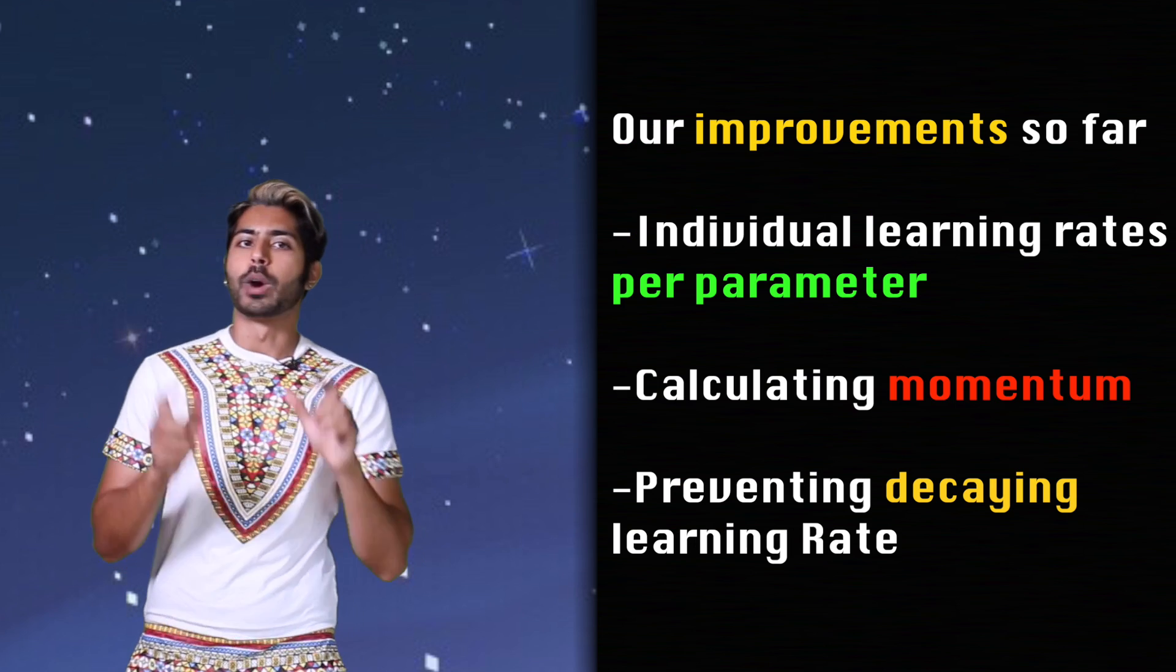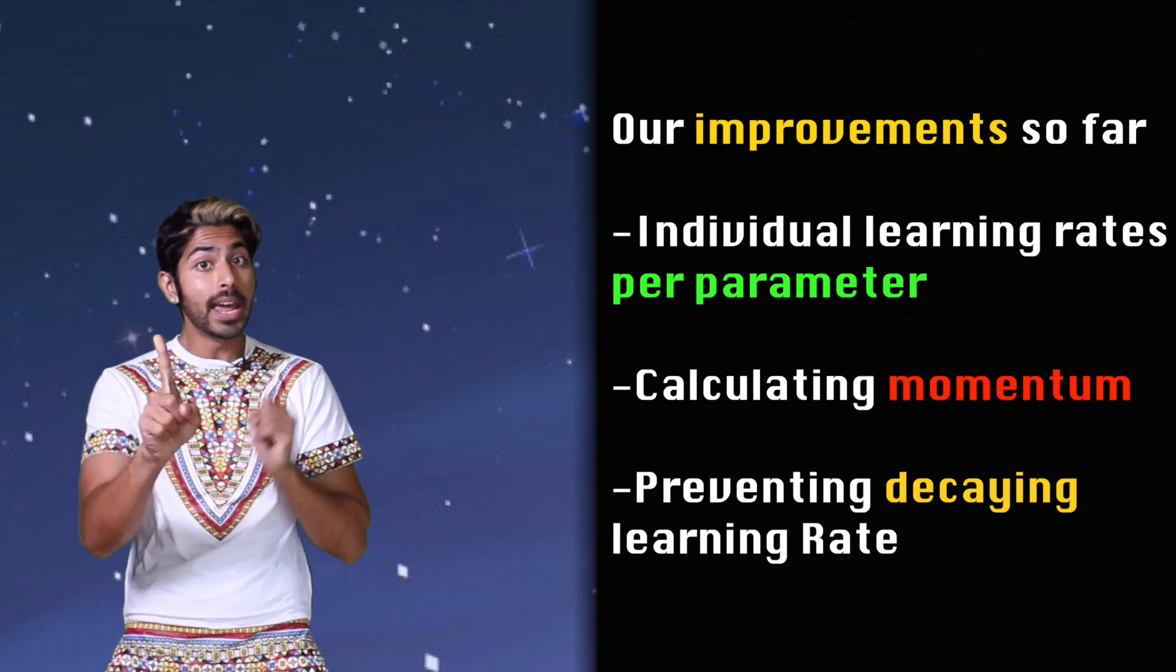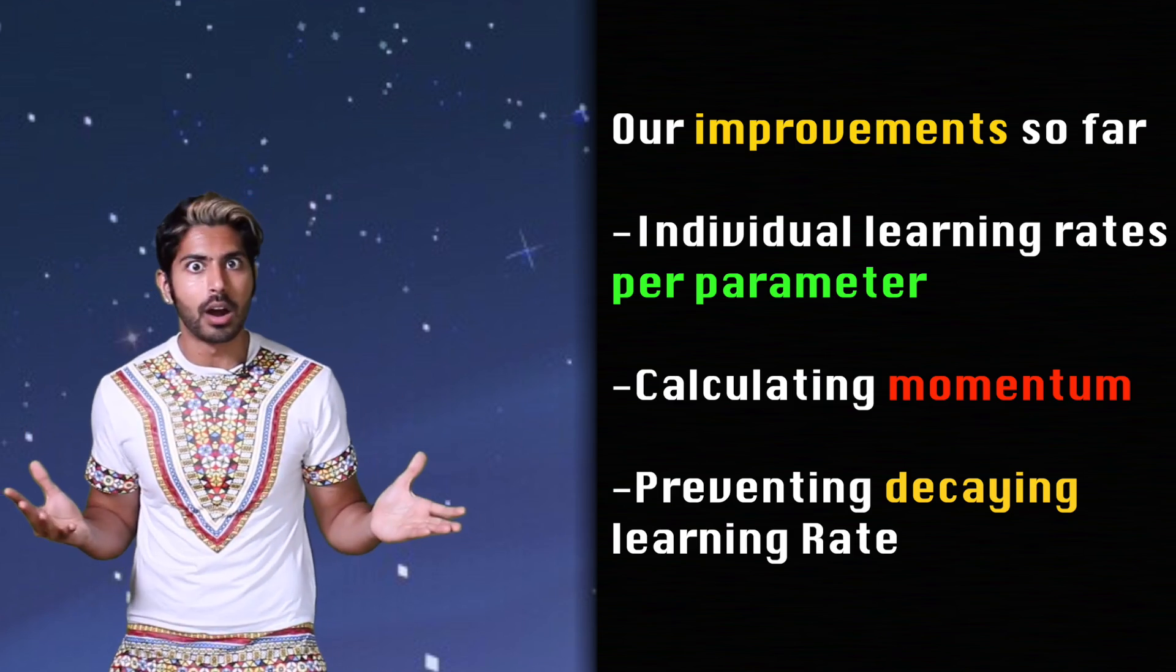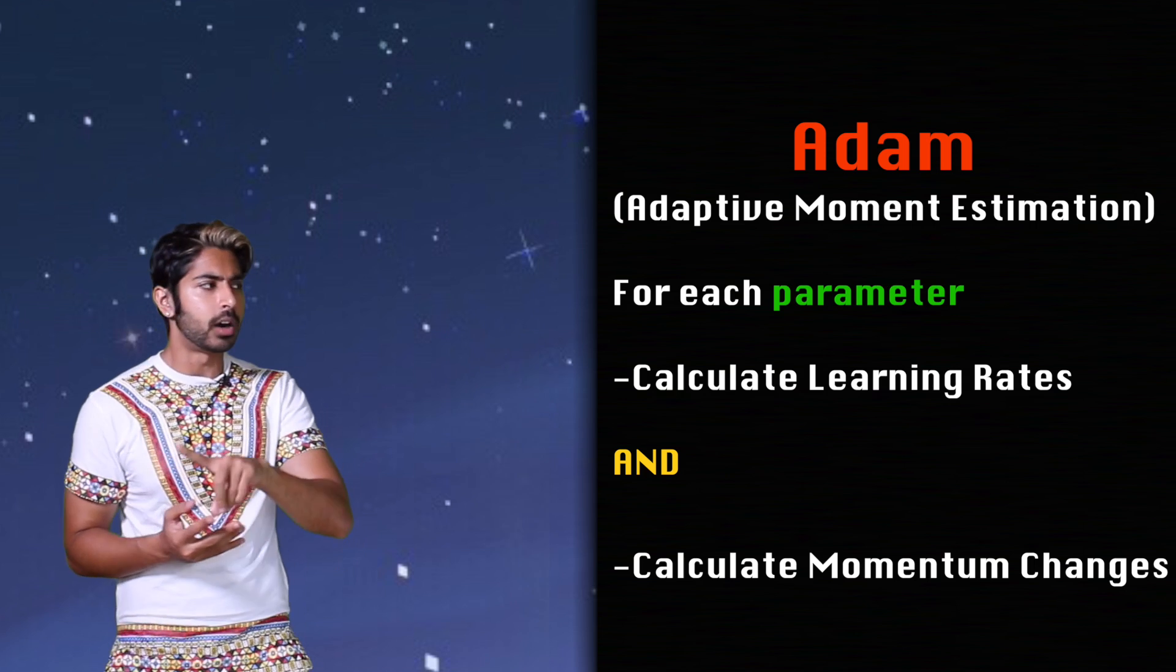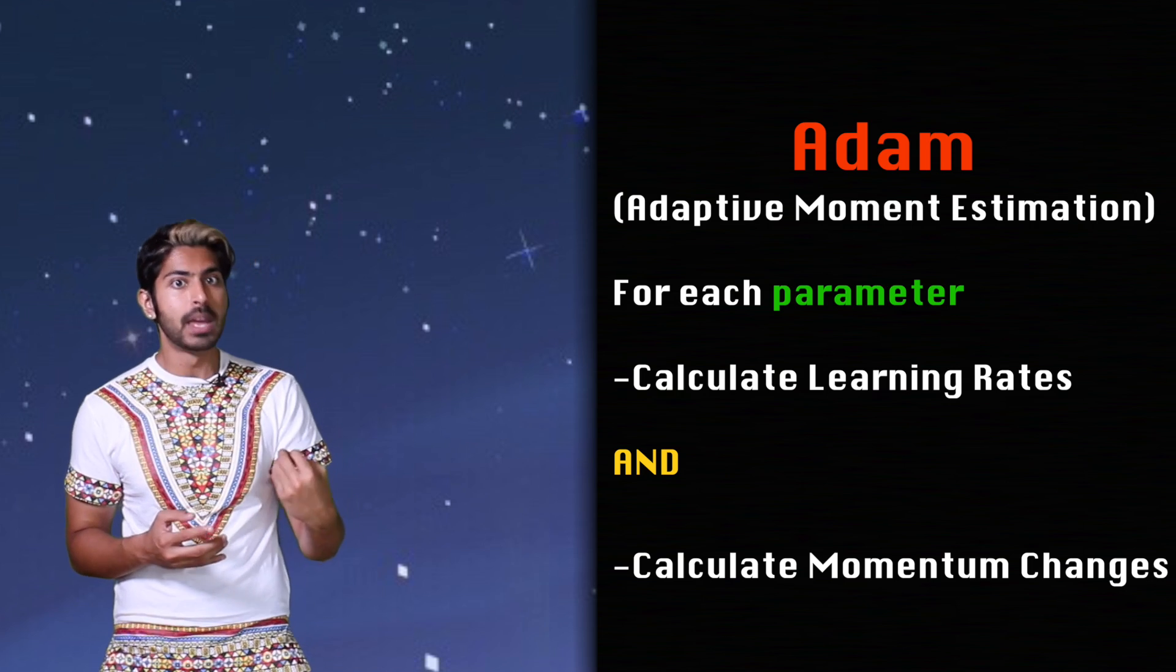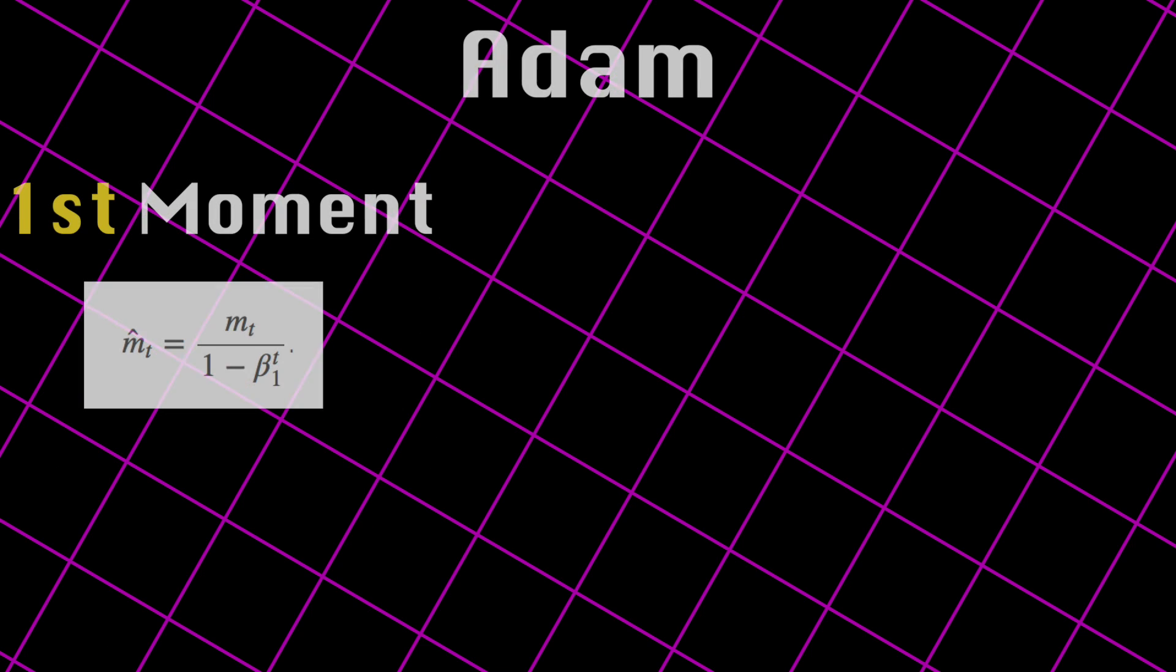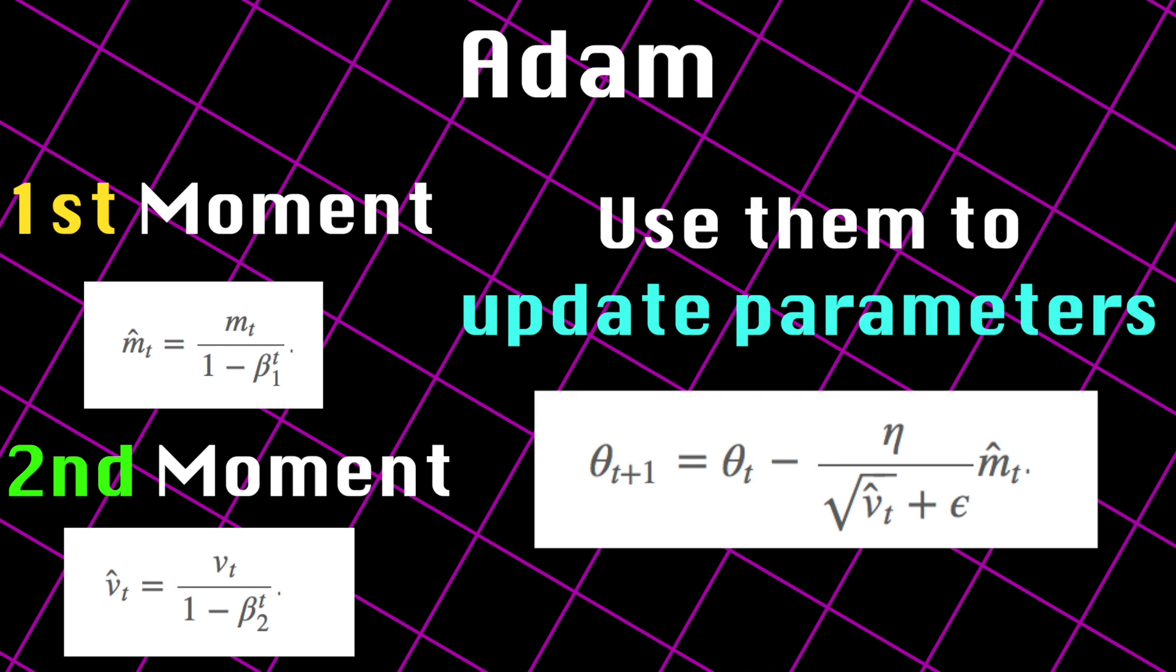So now we're getting somewhere. We're calculating individual learning rates for each parameter, calculating momentum values, and we're preventing a vanishing learning rate. What could we possibly do to improve here? Sprinkle in some adaptive momentum. Since we're calculating learning rates for each parameter, why not also store momentum changes for each of them separately? That's what Adam does. It stands for Adaptive Moment Estimation. We calculate the first moment, the mean, and the second moment, the uncentered variance, of the gradients respectively. Then, we use those values to update the parameters just like in AdaDelta.